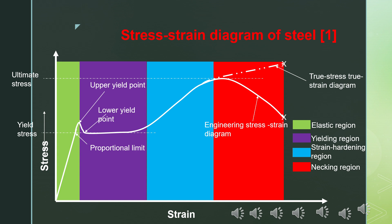The first region is the elastic region, where the material remains elastic. Initially the plot is a straight line till the proportional limit, within which the stress-strain curve is linear and elastic. Beyond the proportional limit, up to the upper yield point, it remains elastic but not linear — this is a very small nonlinear elastic region.